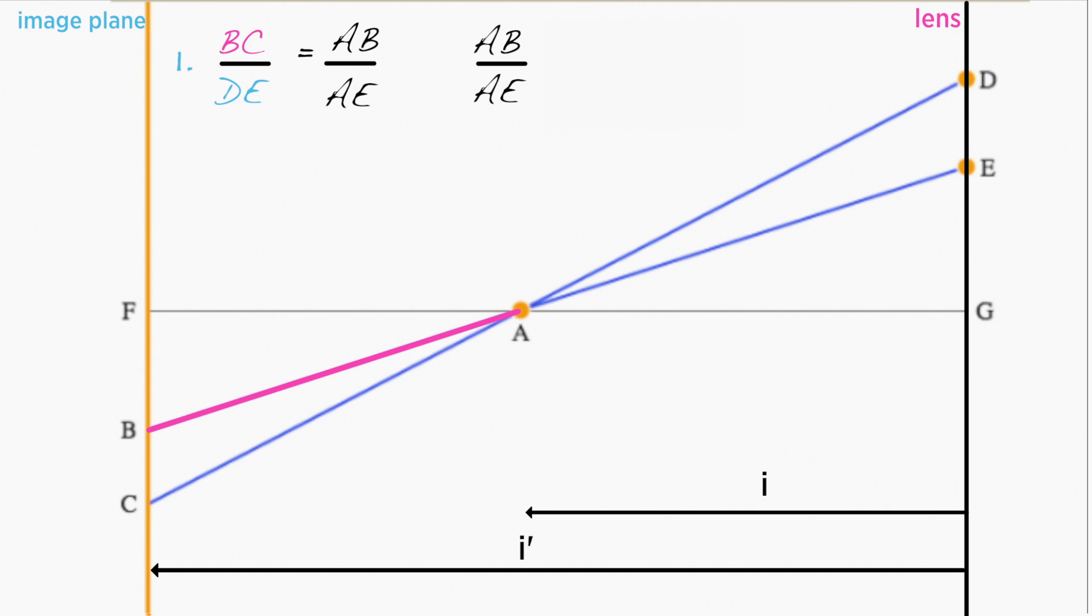This means that AB divided by AE equals FA divided by AG. But FA is just the difference between I and I prime, and AG is the distance I. So we can rewrite this as AB divided by AE equals I prime minus I divided by I.